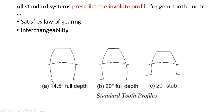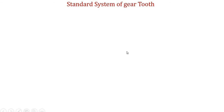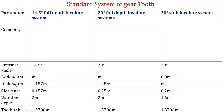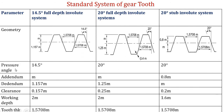There are three standard tooth profile systems: the 14.5 degree full depth system, where 14.5 degrees indicates the pressure angle; the 20 degree full depth system; and the 20 degree stub system. We will now see a comparison between these three systems. The parameters for comparison include geometry, pressure angle, addendum, dedendum, clearance, working depth, and tooth thickness. The pressure angle for the 14.5 degree system is 14.5 degrees.